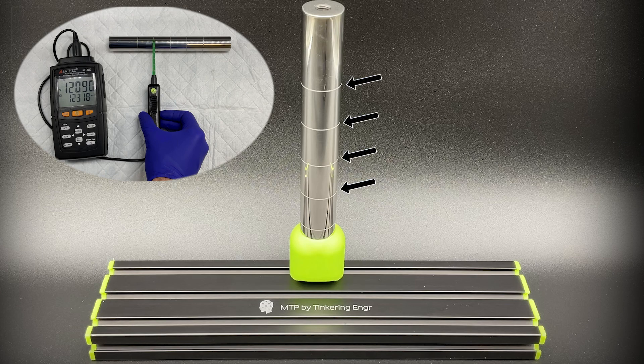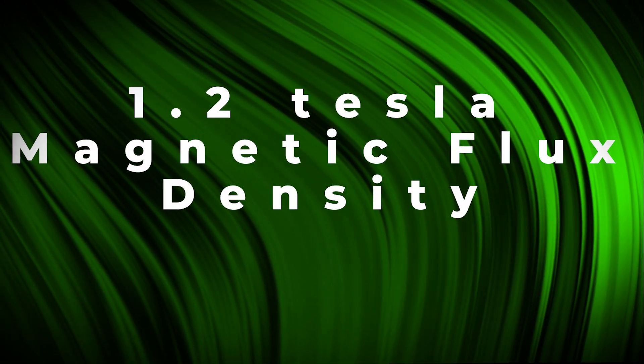Each zone is defined by discrete laser etched lines that produce 1.2 tesla of magnetic flux density.